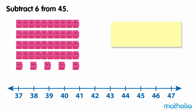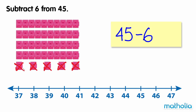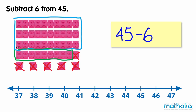Subtract 6 from 45. Let's cross off six cubes and count the number of cubes left: 1, 2, 3, 4, 5, 6. There are three tens and nine ones left. Three tens and nine ones is 39. So 45 minus 6 equals 39.